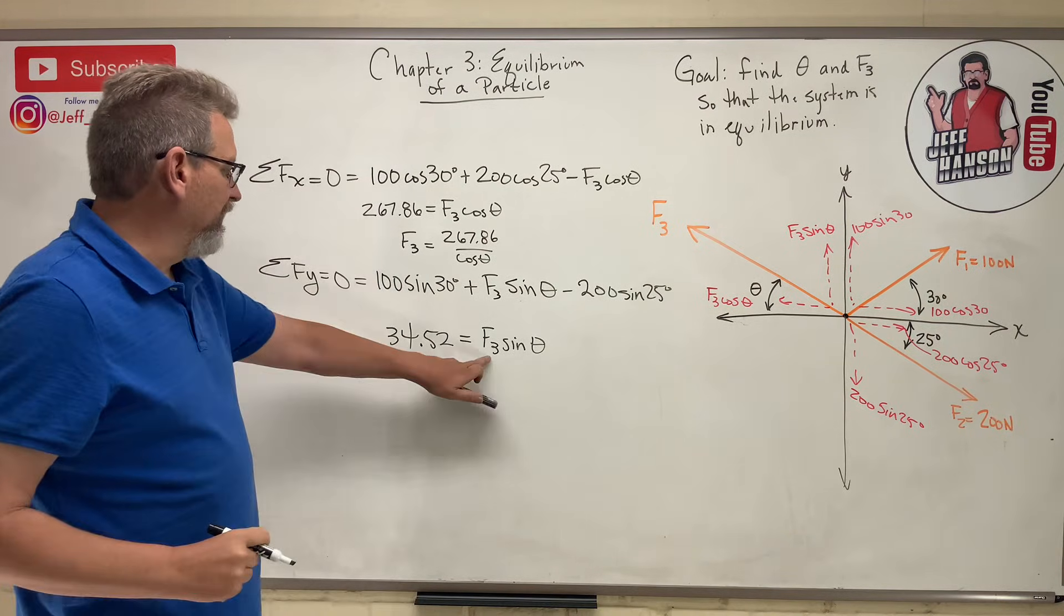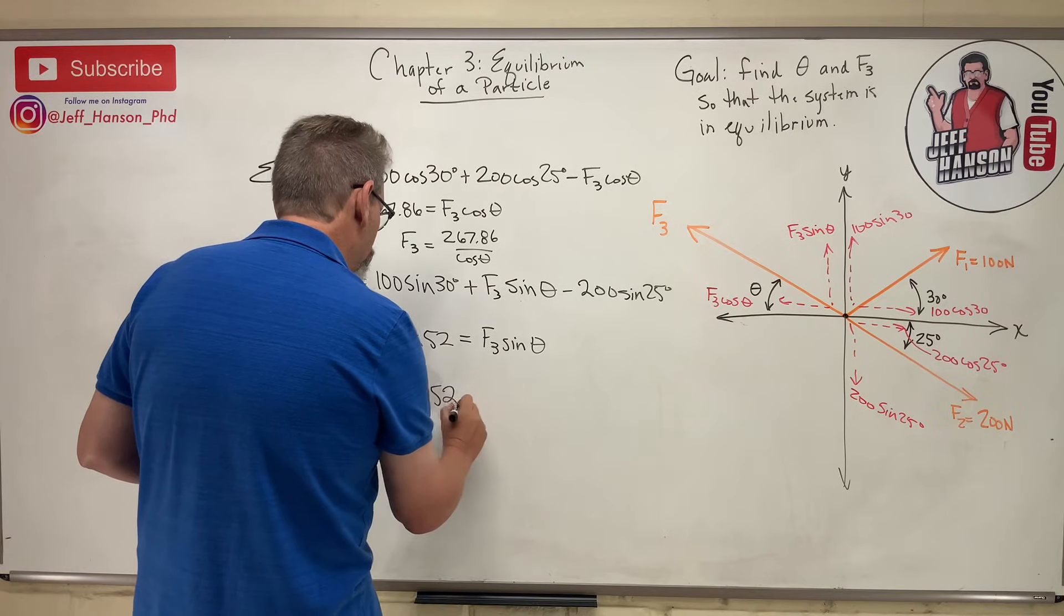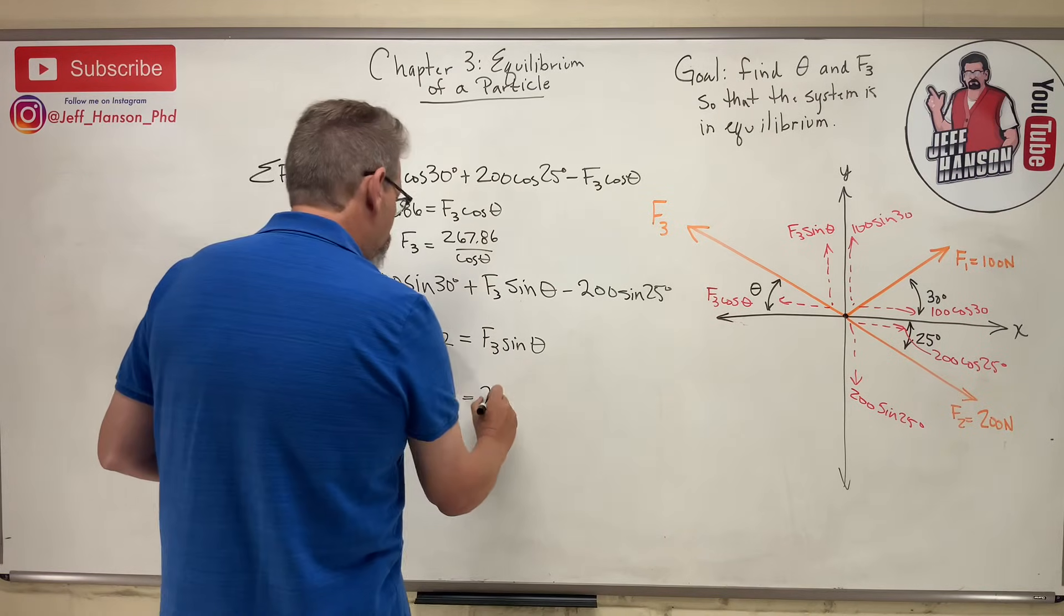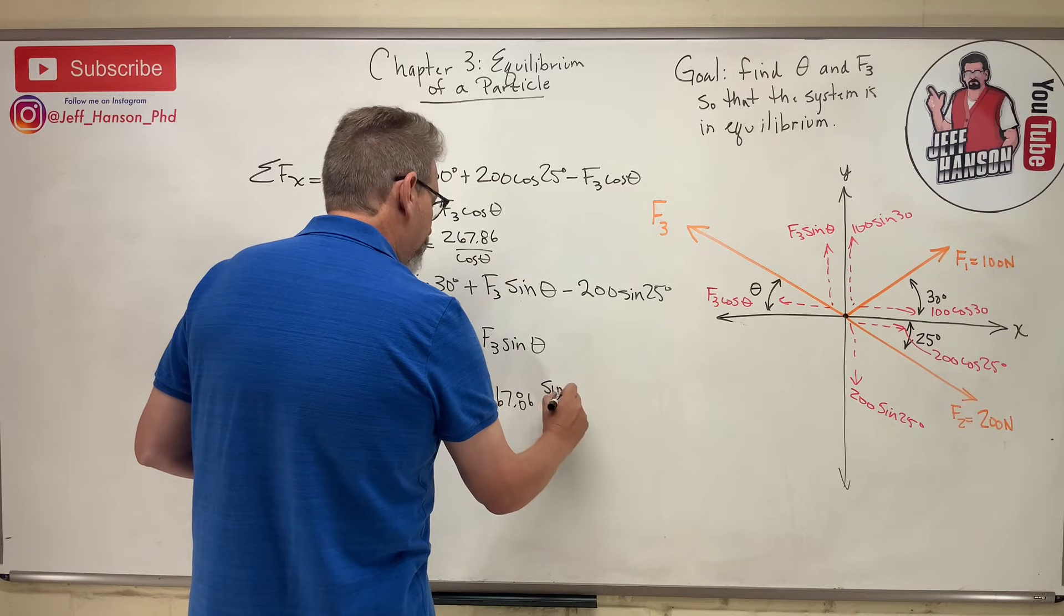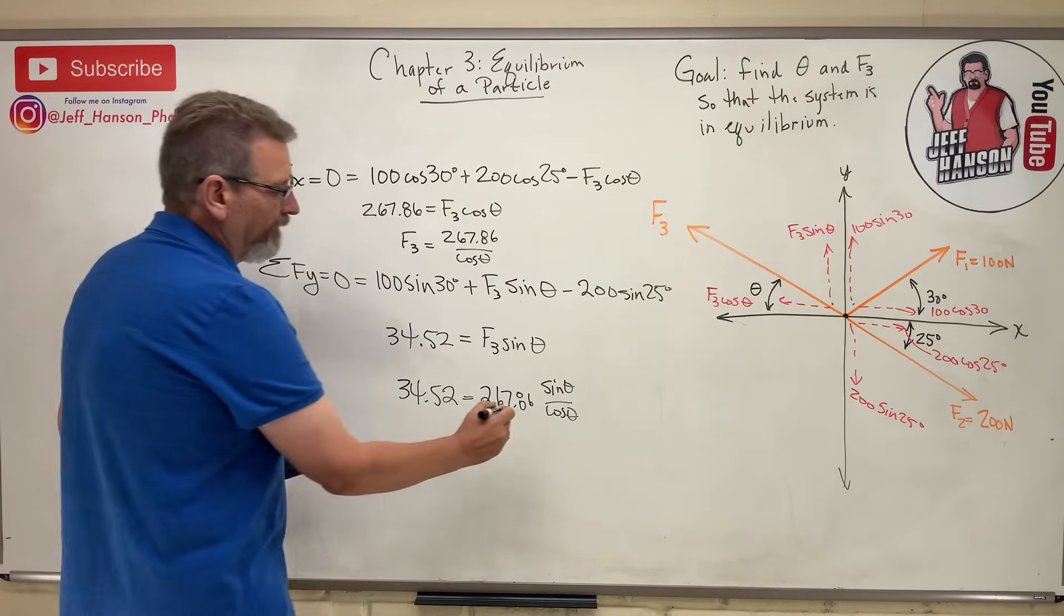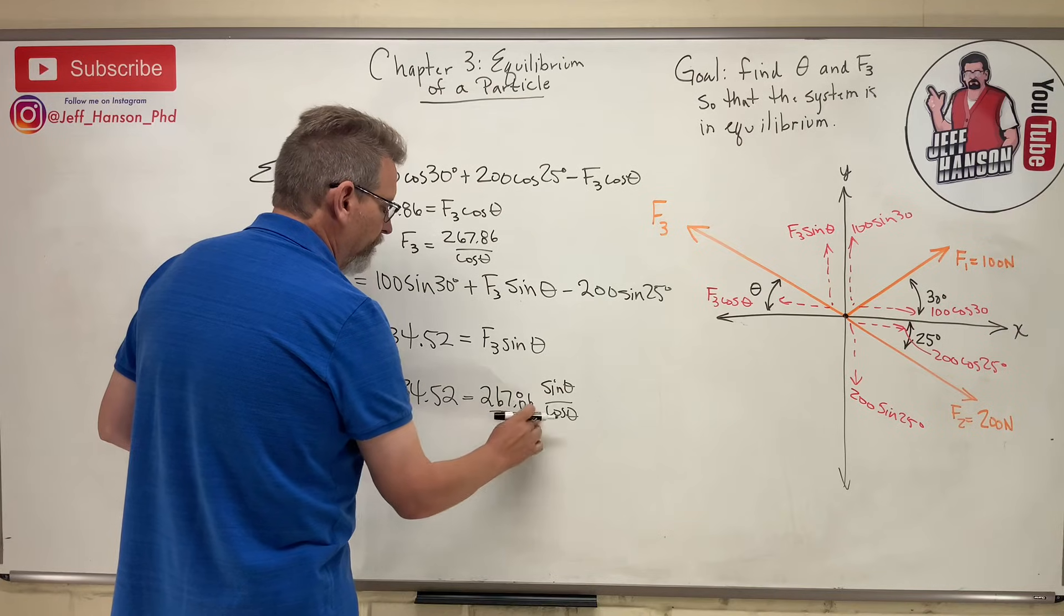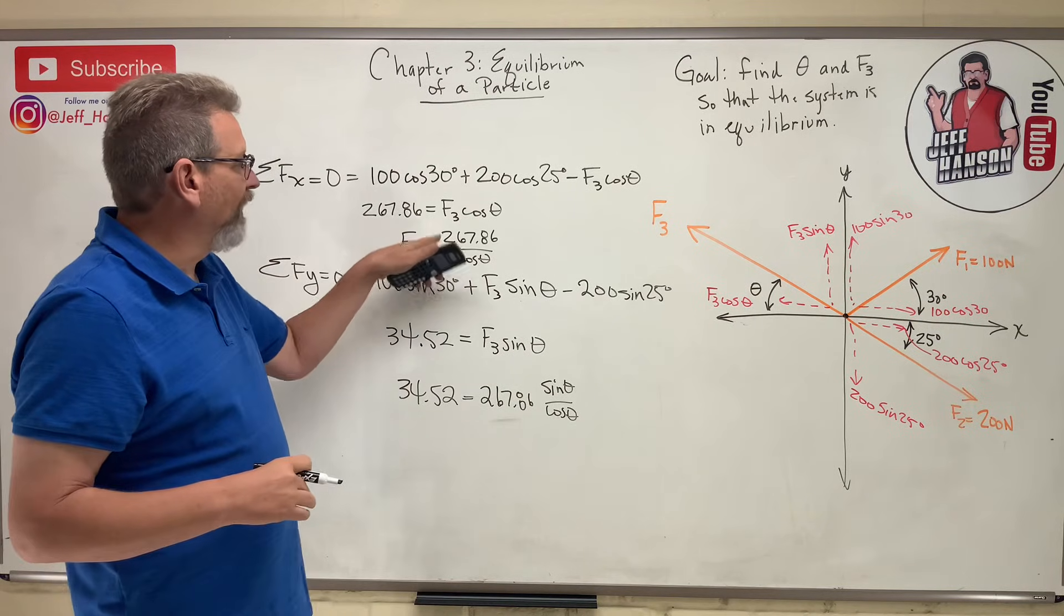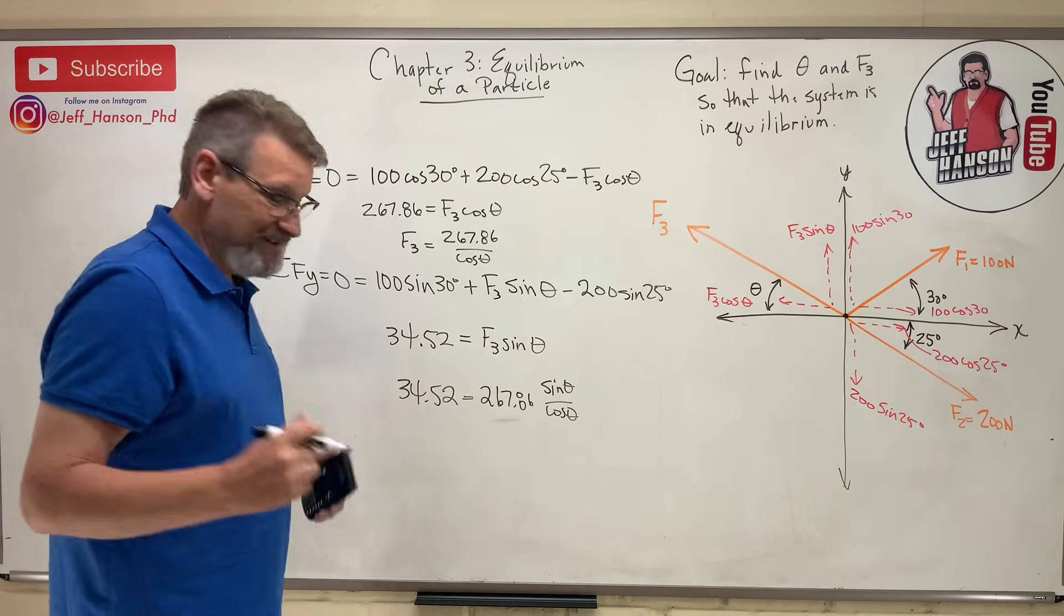Now I'll take that and plug it into this F3, and I get this, 34.52 is equal to, I'm going to plug in this for F3, so I get 267.86 times sine of theta over cosine of theta. Yeah, the cos, it was really over here. But that's the same as putting it over there, it doesn't matter. Okay, so what is sine over cosine? Hey, that's why, that's why I always go after the one with cosine in it to get cosine on the bottom, because sine over cosine is tangent.